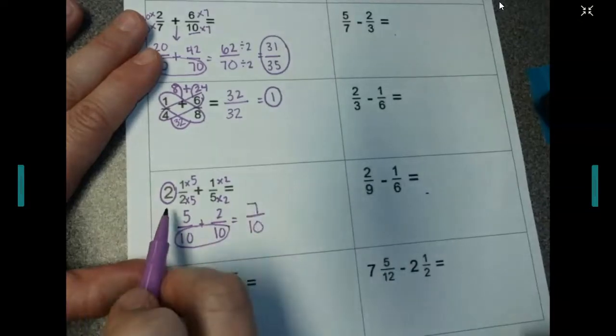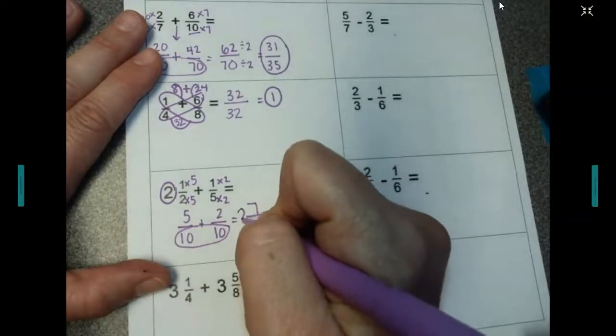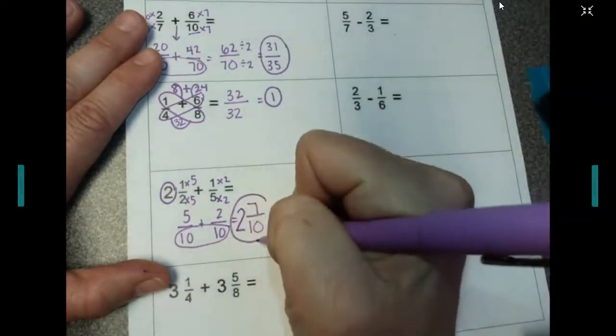However, we need to remember our whole number, which is 2. So I add that right in the beginning. 2 and 7/10 is our answer.